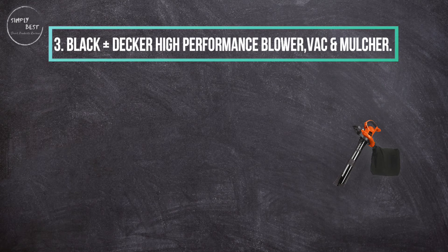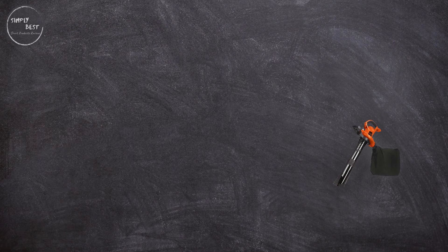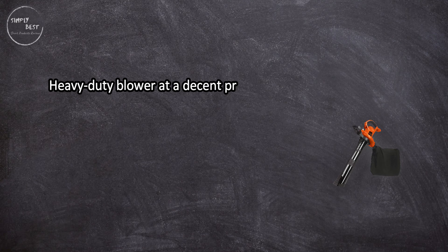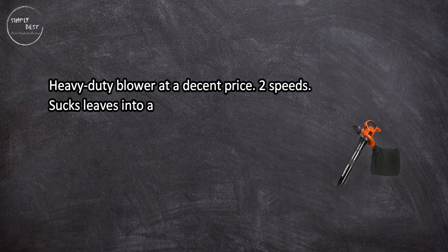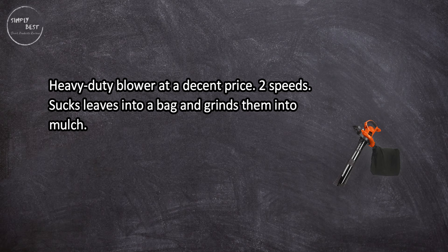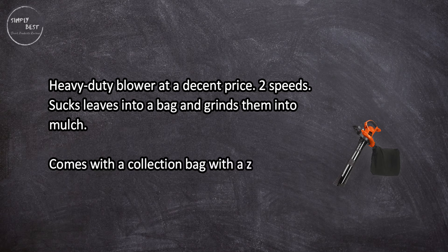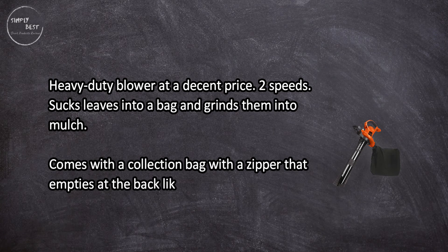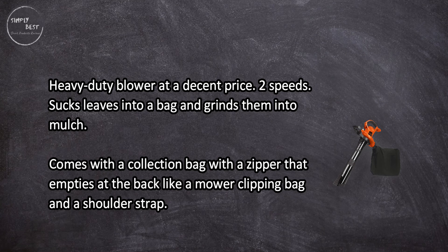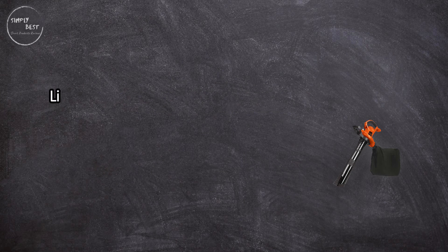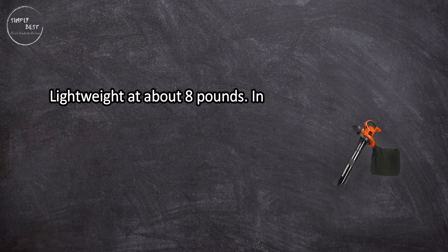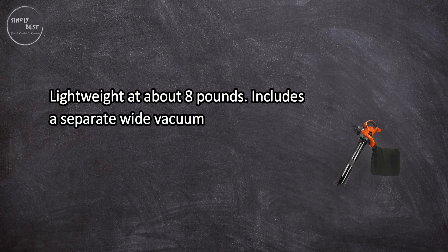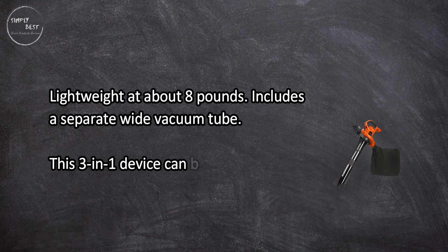At number three, Black + Decker high-performance blower vac and mulcher. Heavy-duty blower at a decent price, two speeds, sucks leaves into a bag and grinds them into mulch. Comes with a collection bag with a zipper that empties at the back like a mower clipping bag and a shoulder strap. Lightweight at about eight pounds, includes a separate wide vacuum tube. This three-in-one device can blow and mulch as well as vacuum.